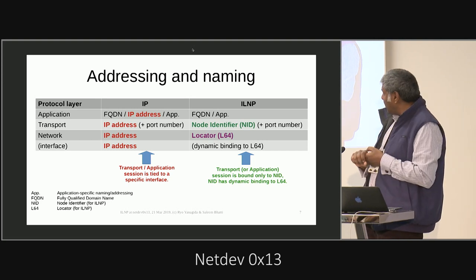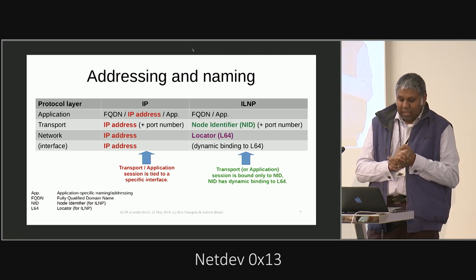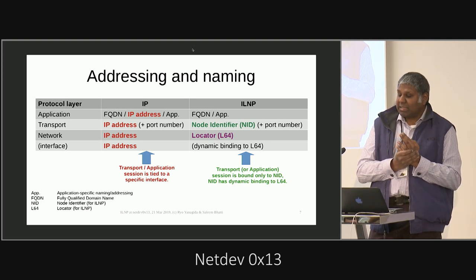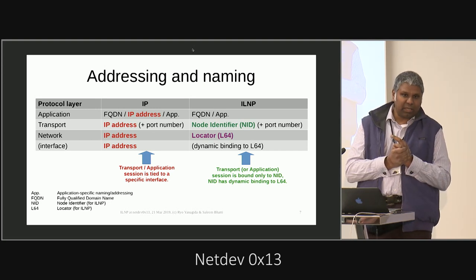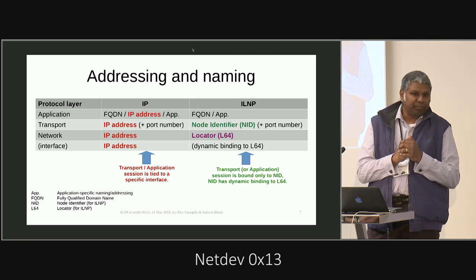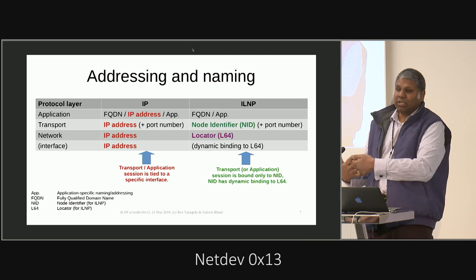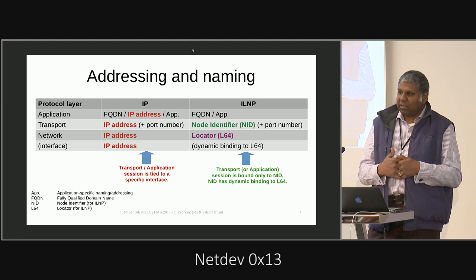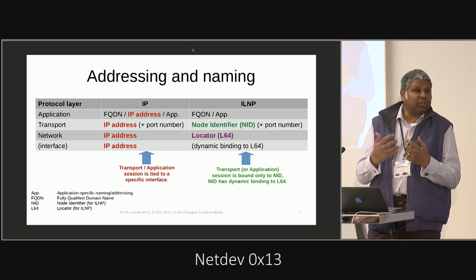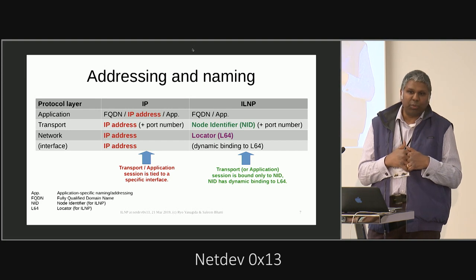We introduced two new namespaces: a locator and a node identifier. We also decided not to have the tight semi-permanent binding between addresses and objects in the protocol stack. So there are now dynamic bindings between node identifiers and locators, and dynamic bindings between locators and interfaces. A node identifier doesn't identify an interface — it identifies a node. It's dynamically bound to a locator. If that node changes location, it binds to a new locator and you have mobility. If you want a node to be multi-homed, you dynamically bind the node identifier to multiple locators.